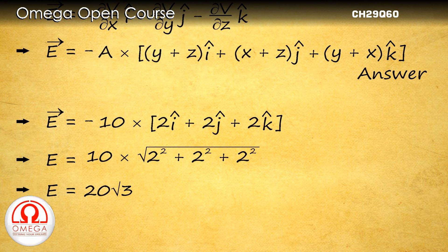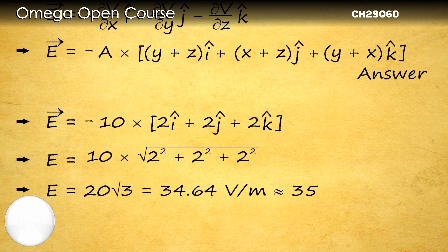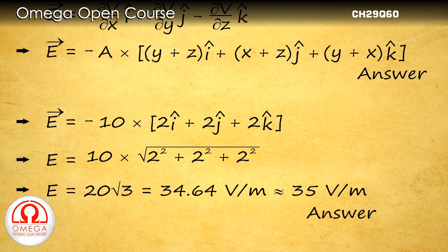Putting the value of root 3, we get 34.64 volts per meter, or approximately 35 volts per meter. Thus the magnitude of electric field at the given point is 35 volts per meter. This is the answer to part C of the question.